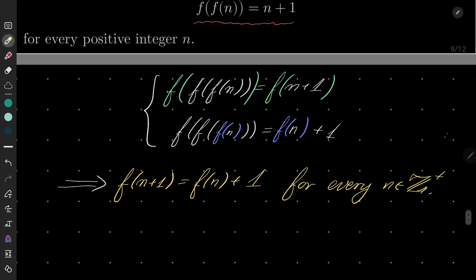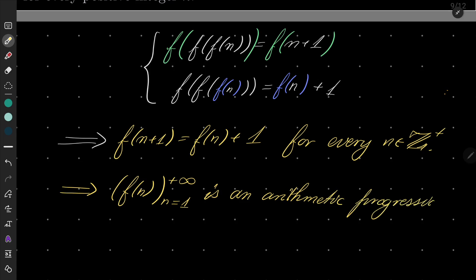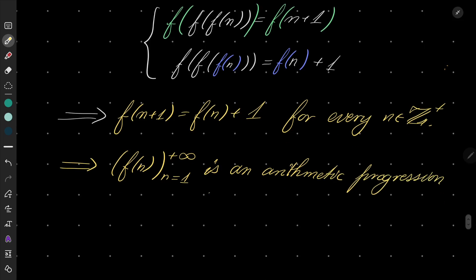Very nice. But now notice that exactly means our sequence is an arithmetic progression. So our sequence f(n) from n equals 1 to infinity is an arithmetic progression with difference d equals 1.